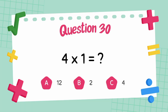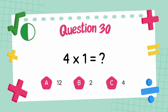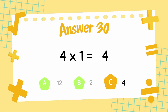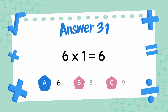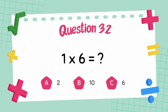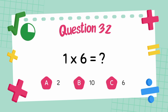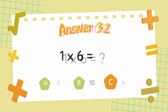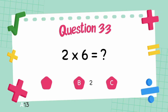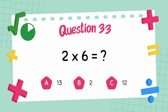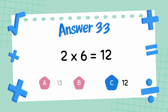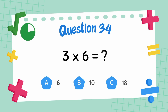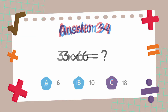What is 4 multiply 1? The answer is 4. What is 6 multiply 1? The answer is 6. What is 1 multiply 6? The answer is 6. What is 2 multiply 6? The answer is 12. What is 3 multiply 6? The answer is 18.